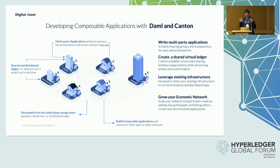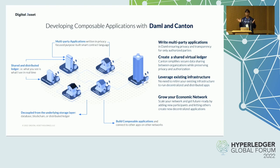DAML is a programming language for building smart contract applications focused on business transaction workflows. Canton is a privacy-enabled distributed ledger protocol for distributing data, trust, and execution order that can operate independently or with blockchains. Using DAML and Canton, you can build multi-party backend DAML applications running with different storages, and create front-end applications for each participant integrated with their other applications and systems.